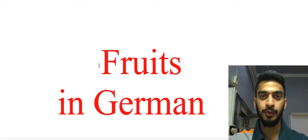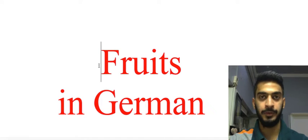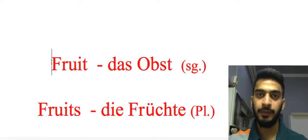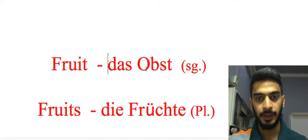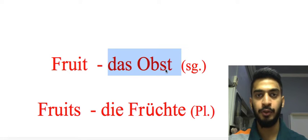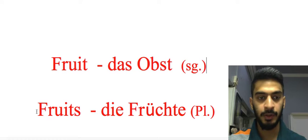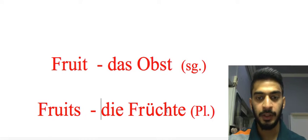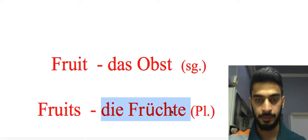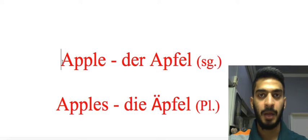I have explained these words in singular as well as in plural forms. First we have the translation for the word fruit — the word is 'das Obst' in singular form, then plural 'Früchte'. Our first fruit is apple — the word is 'der Apfel' in singular form.